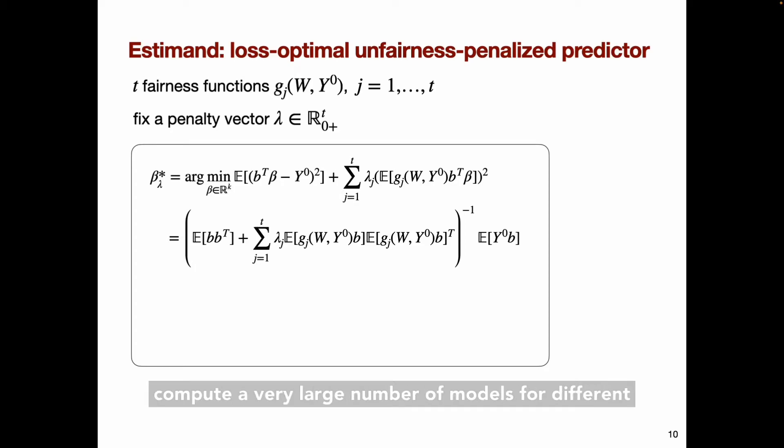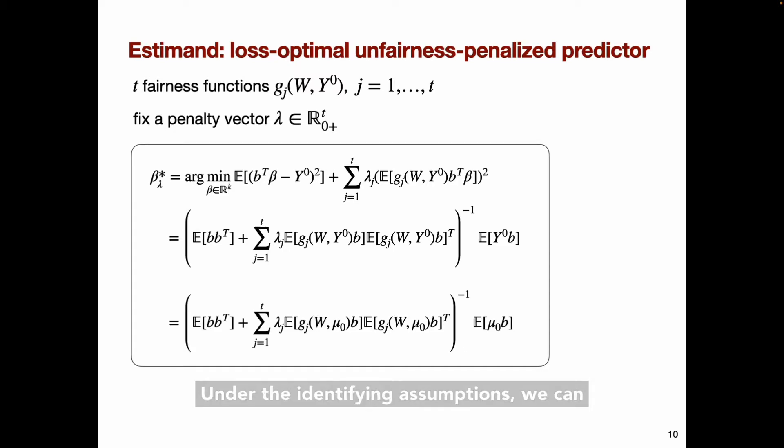The reason for the squaring is that this gives us a closed-form solution, which will enable us to efficiently compute a very large number of models for different penalties lambda. Under the identifying assumptions, we can write this closed-form solution in this form, where instead of the counterfactual Y zero, we now have this quantity mu zero. Mu zero is a nuisance parameter, which importantly only involves observed variables, so it can be estimated.